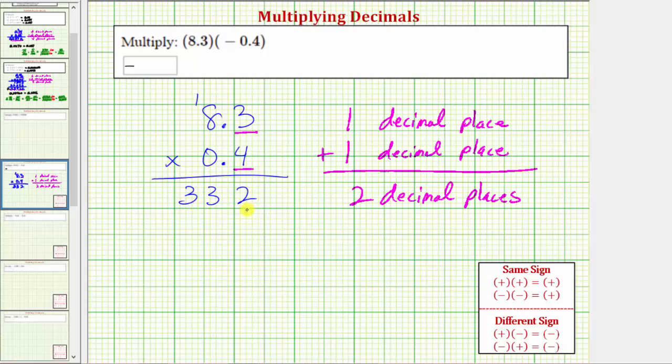For 332, the decimal point is to the right of the two. But now because we know our product must contain two decimal places, we now move the decimal point to the left two places. So one, two, which gives us 3.32.